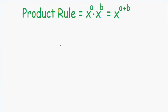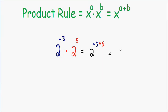Let's go over another example using negative exponents. Let's say we have two with a negative three exponent being multiplied by two with a positive five exponent. We still use the same rule — just because we have a negative exponent it doesn't change anything. We have a common base of two, so we add the exponents: negative three plus five equals positive two. So we have two squared which is equal to four.